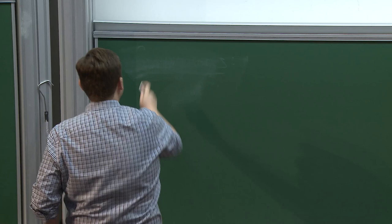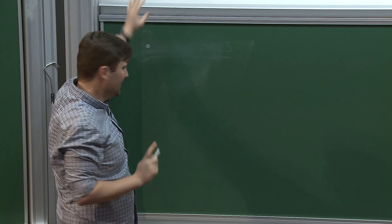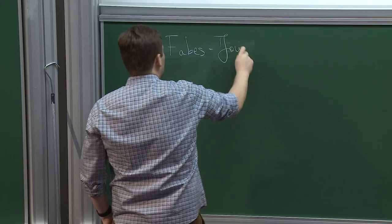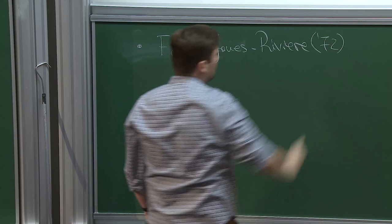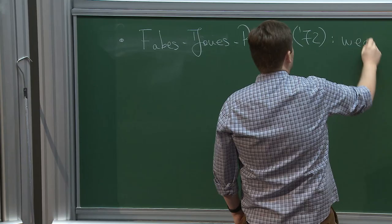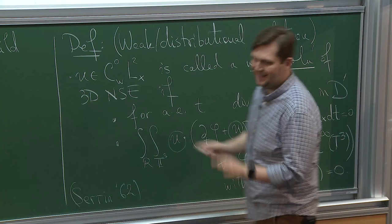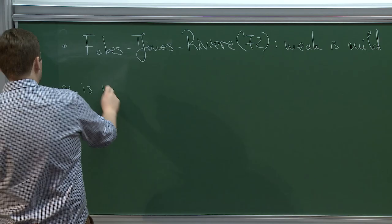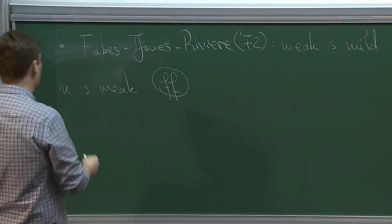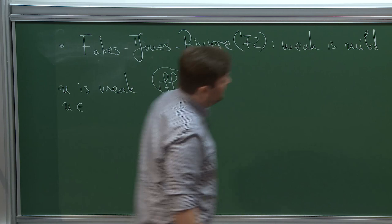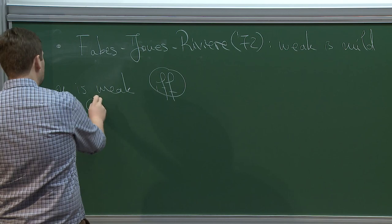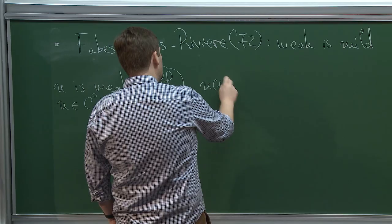Before I tell you the difference with Leray, let me mention an old result of Fabes, Jones, and Rivière from 1972, which essentially says weak is mild. It says: if you have U which is a weak solution in the sense of this definition — and I should impose some regularity, any Lp-Lq with p more than 2 works — then this holds if and only if U(t) equals e^{tν Δ} times the initial data...